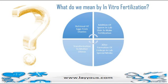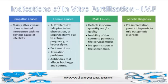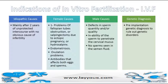The dishes are put in special incubators until embryos are formed and then transferred into the woman's uterus, which is done from 2 to 5 days. Indications of IVF can be classified into four groups: idiopathic causes, female causes, male causes, and pre-implantation genetic diagnosis to rule out genetic disorders.